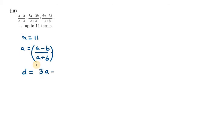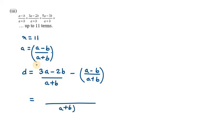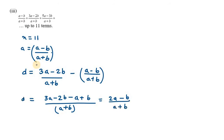D is the second term minus the first term: (3A minus 2B) over (A plus B) minus (A minus B) over (A plus B). The denominators are the same. The numerator becomes 3A minus 2B minus A plus B. 3A minus A gives 2A, and minus 2B plus B gives minus B. So D is (2A minus B) over (A plus B).